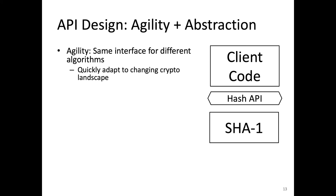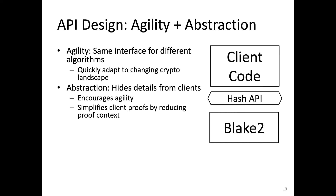Similarly, for hash functions, there are many possible hashing algorithms, and we may want to upgrade from something like SHA-1 to something more modern and secure. Such upgrades may come in reaction to new advances in cryptanalysis, new hardware acceleration opportunities like AES-NI, or new advances in computation like quantum computers. Abstraction hides as many details as possible from the client — both about internal code details and internal data representations — ensuring that clients will not rely on the specifics of any given algorithm, and their code will work for any current or future hash function.